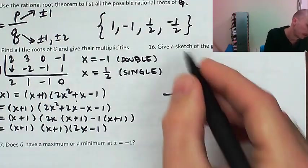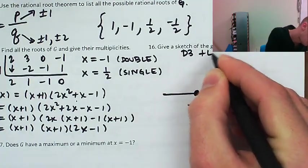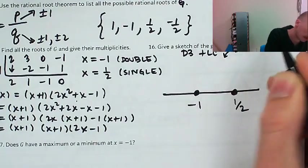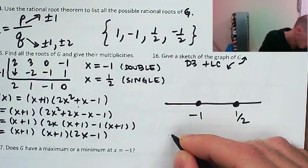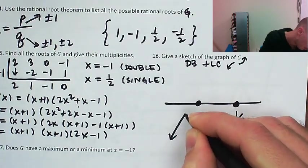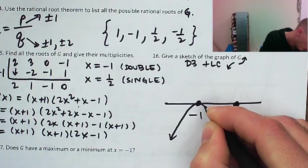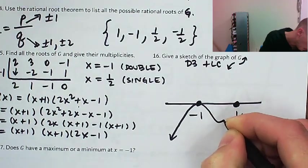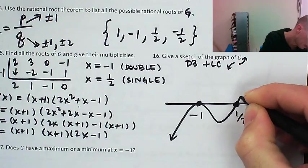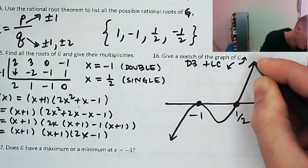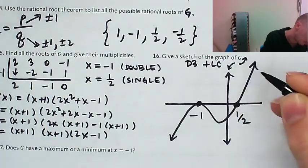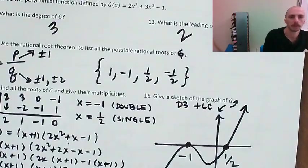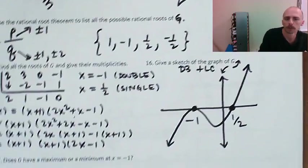With a third-degree polynomial with a positive leading coefficient and zeros at x equals negative 1 and x equals one half, the graph looks like y equals x cubed in end behavior, coming from below. x equals negative 1 is a double root so the graph bounces there, and then it passes through x equals one half with confidence. We'd see a negative y-intercept, which matches the equation.